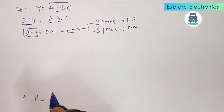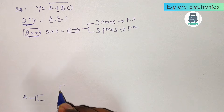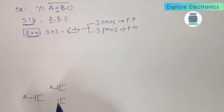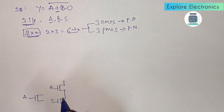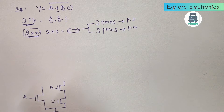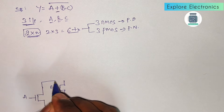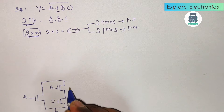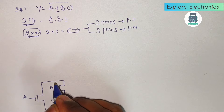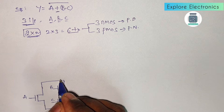This transistor with gate input a will be in parallel with b·c. For b·c we need two transistors with gate inputs b and c connected in series. These two b and c transistors in series are in parallel with the a transistor, which gives the output a + b·c.